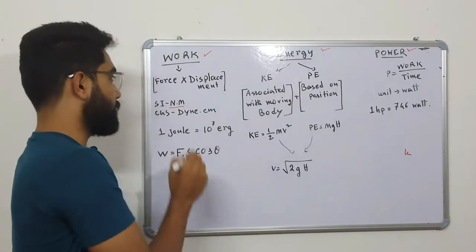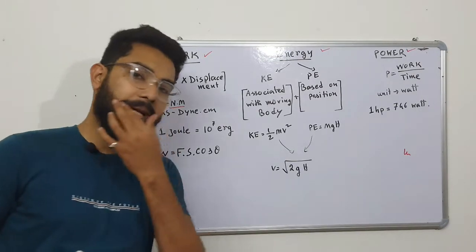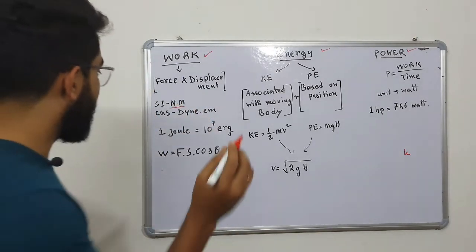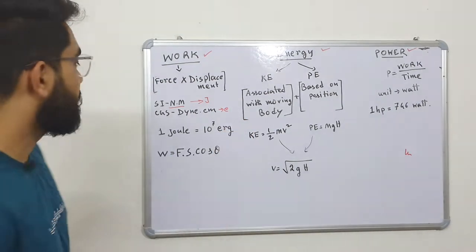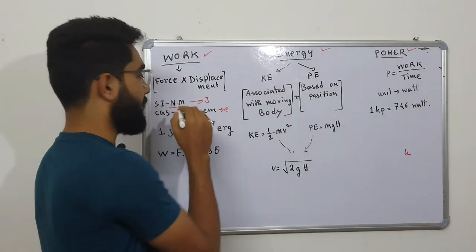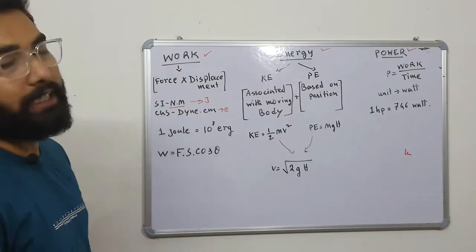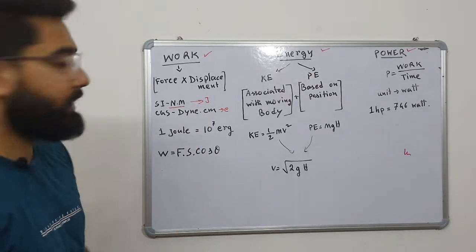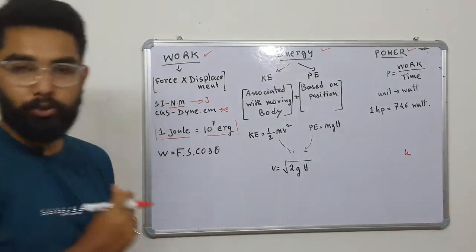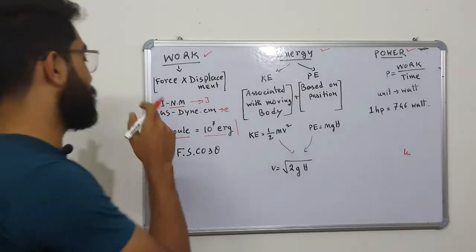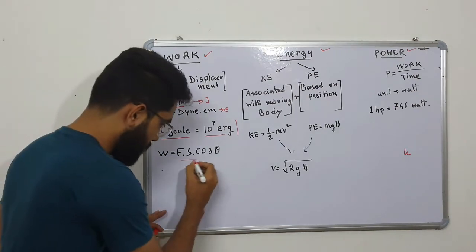In CGS system, force is dyne and displacement is centimeter, so the unit is dyne into centimeter, which is Erg. In SI, Newton into meter equals Joule. The conversion is: 1 Joule is equal to 10 to the power 7 Erg.